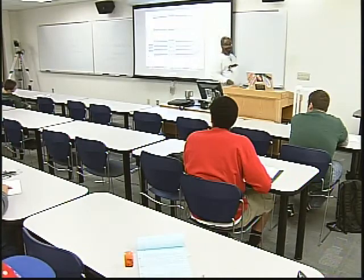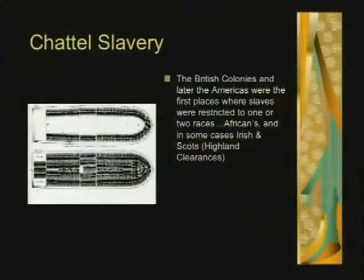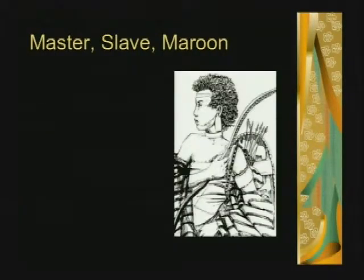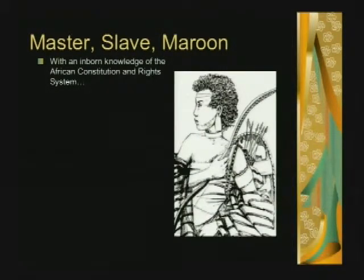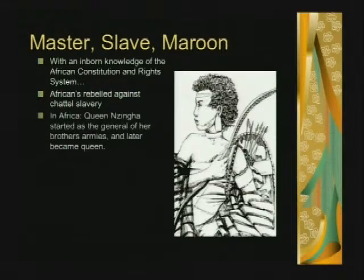The British colonies, and later the Americans, were the first places where slaves were restricted to one or two races — Africans, and in some cases Irish and Scots via the highland clearances. The Irish and Scots were shipped on ships like this as well. With an inborn knowledge of the African rights and constitution system, Africans rebelled, as did the Scots and Irish, against chattel slavery.